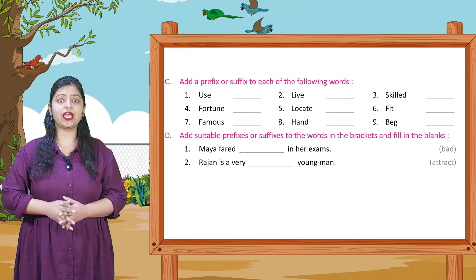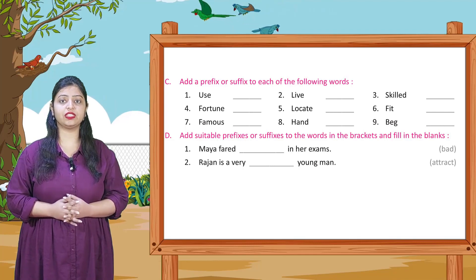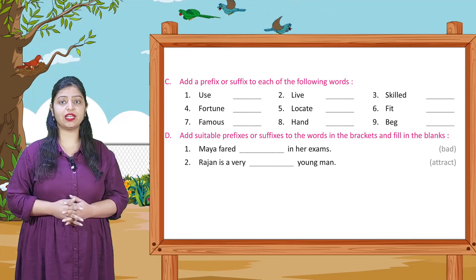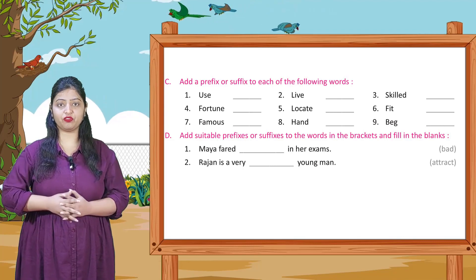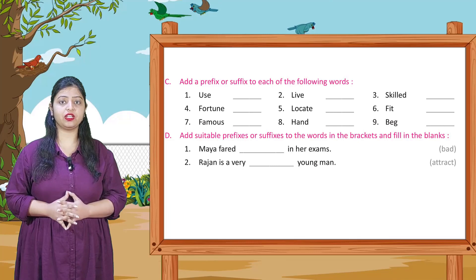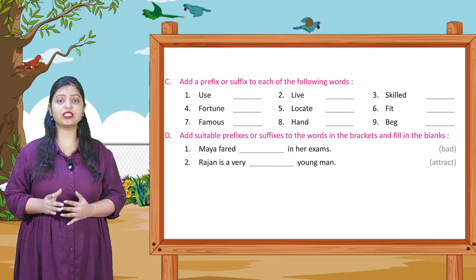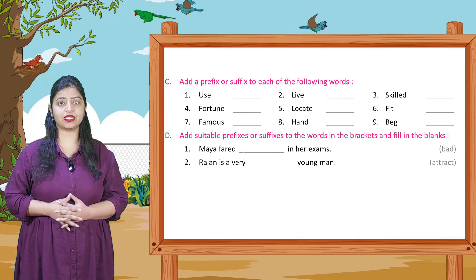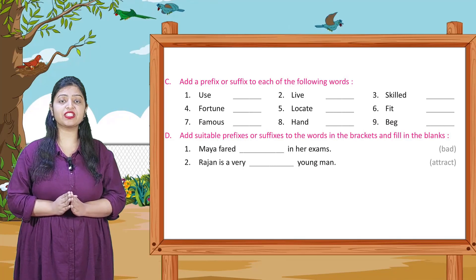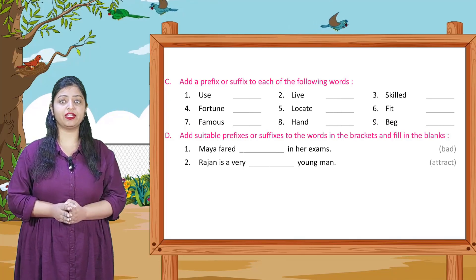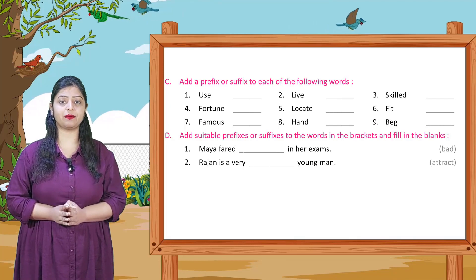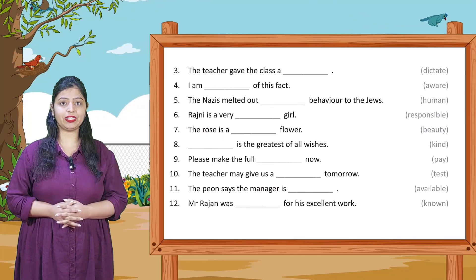Section D: Add suitable prefix or suffix to the words in brackets and fill in the blanks. Bracket mein kuch words diye gaye hain, unme prefix ya suffix add karke meaningful word banake sentences complete karna hai. Pehla example: Maya failed badly in her exams — yahan bracket mein 'bad' word diya gaya hai, usme suffix '-ly' add karke 'badly' bana. Isi tarike se baaki aap apne aap complete karenge.